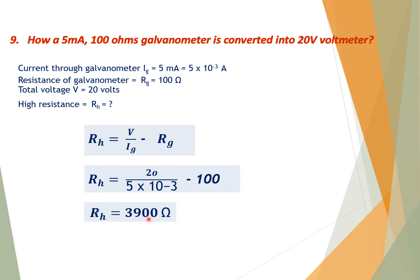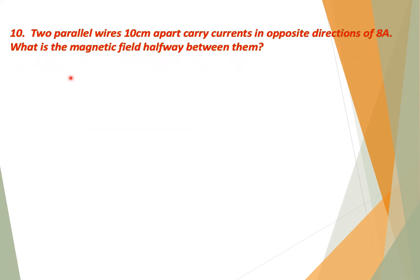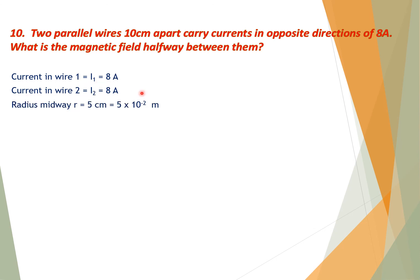Numerical number 10: Two parallel wires 10 cm apart carry currents in opposite directions of 8 ampere each. What is the magnetic field halfway between them? Given: I₁ = 8 A, I₂ = 8 A, midpoint radius R = 5 cm, μ₀ = 4π×10⁻⁷ Wb/A·m.